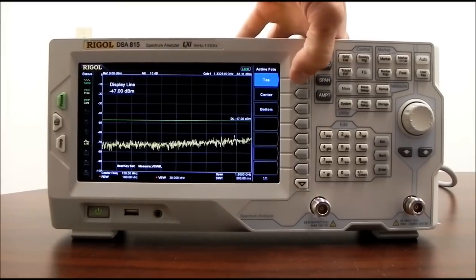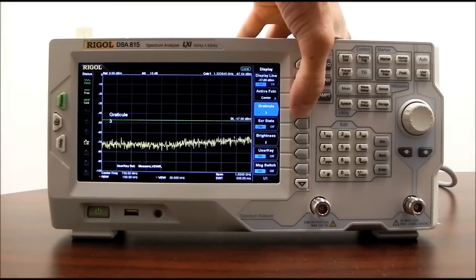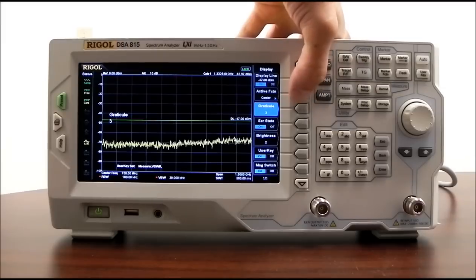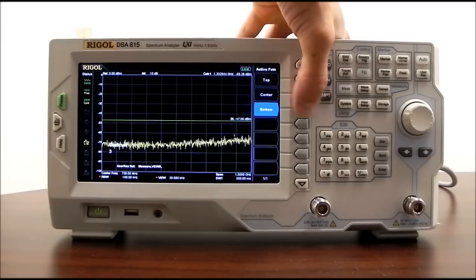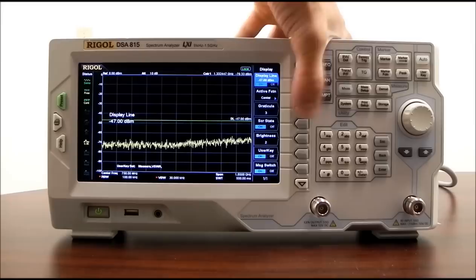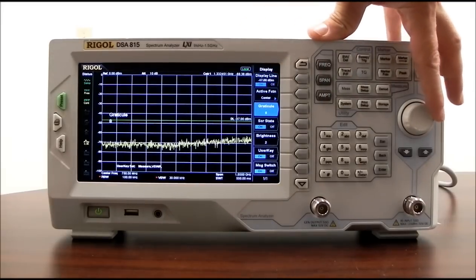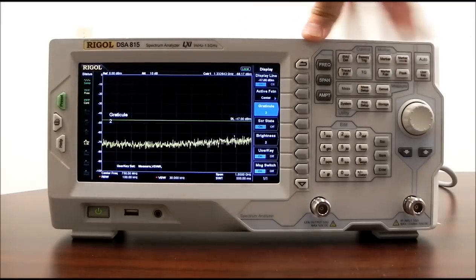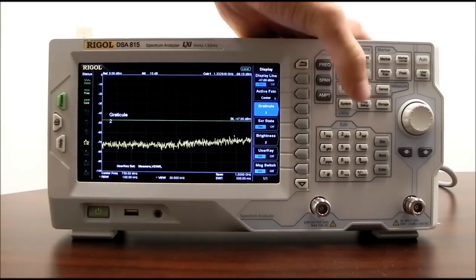In this case, we have display line. We can set it to top, center, or bottom if you wanted it out of the way. We also can set the graticle brightness. We can disable the screen. We can also set the trace brightness.